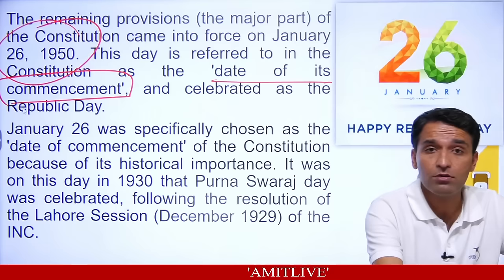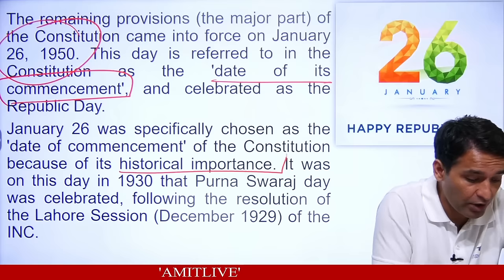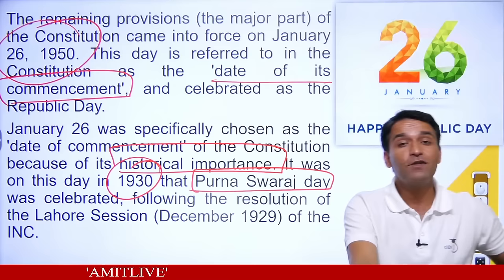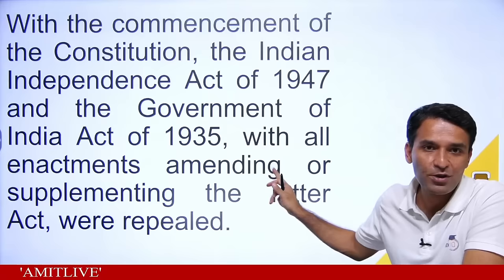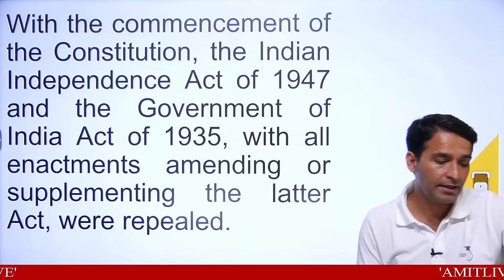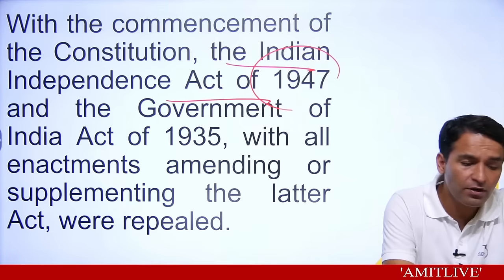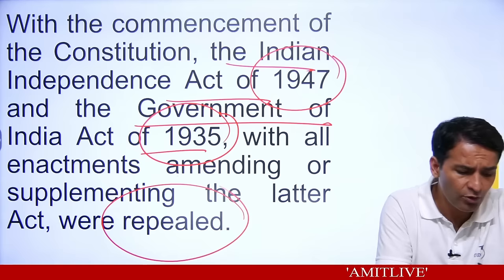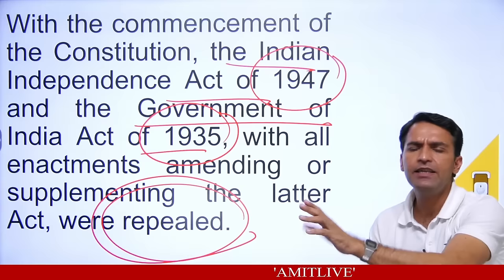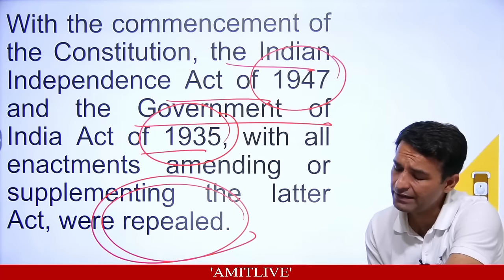The constitution itself says that as soon as the constitution starts, the Indian Independence Act of 1947 and the Government of India Act of 1935 will also be automatically repealed. So from 26th January 1950, the Indian Independence Act 1947 ended and the Government of India Act 1935 also ended. The Government of India Act 1935 was India's constitution from 1935 to 1950, and the Government of India Act 1919 was from 1919 to 1935.